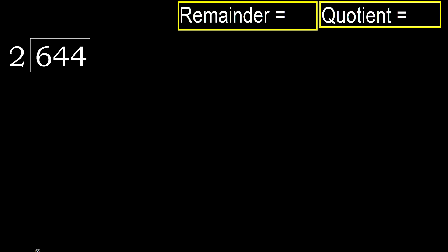644 divided by 2. 6 is not less, therefore with 6. 2 multiplied by which number is nearest to 6, but not greater.